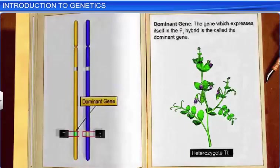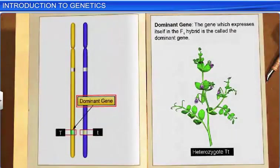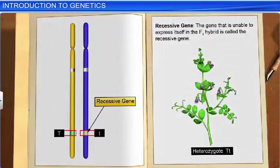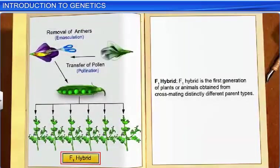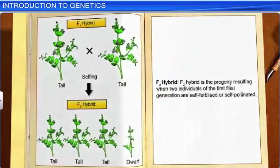The gene which expresses itself in the F1 hybrid is called the dominant gene, while the gene that is unable to express itself is called the recessive gene. F1 hybrid, or first filial generation, is the first generation of plants or animals obtained from cross-mating distinctly different parent types. When two individuals of the first filial generation are self-fertilized, the resulting progeny is called the second filial generation or F2 hybrid.